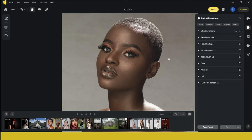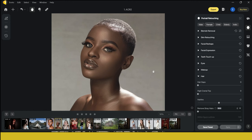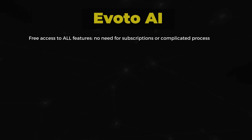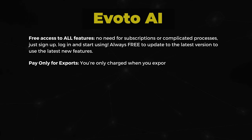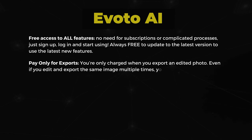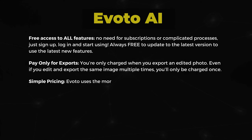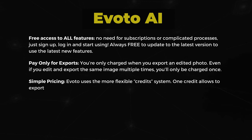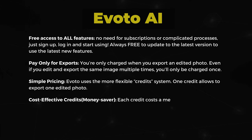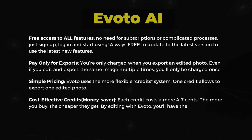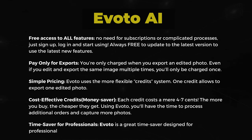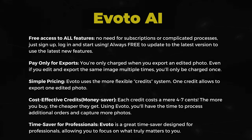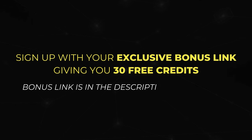I want to mention that Avoto AI kindly sponsored this video. Using Avoto you'll get free access to all features — no subscriptions or complicated processes, just sign up, log in, and start using. It's always free to update to the latest version. You only pay for exports, so you're only charged when you export an edited photo, and even if you export the same image multiple times you'll only be charged once. Avoto uses a flexible credit system: one credit equals one exported photo. Credits are really cheap at four to seven cents — the more you buy, the cheaper it is. Sign up with the exclusive bonus link in the description for 30 free credits.